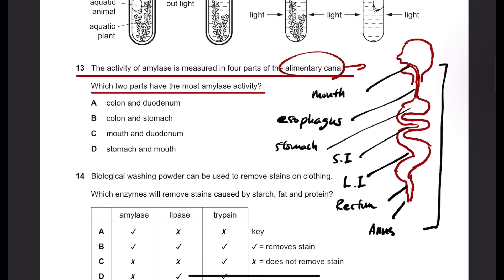And in the elementary canal, there are a few parts where amylases are present. So for instance, mouth, and small intestine, especially the duodenum, which is the entrance of the small intestine. And that's it. So mouth and duodenum is the answer for this one.